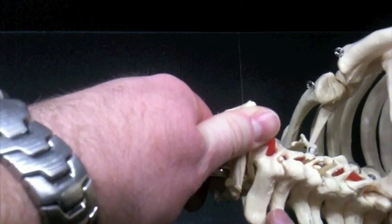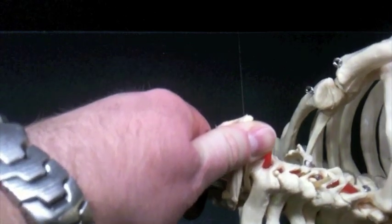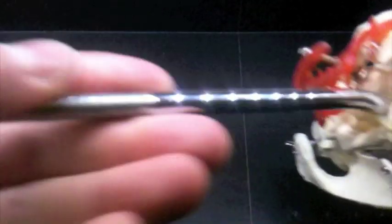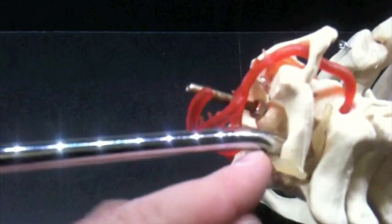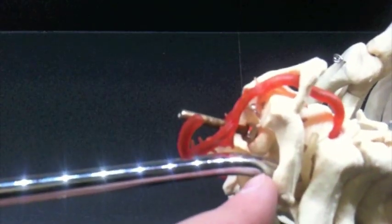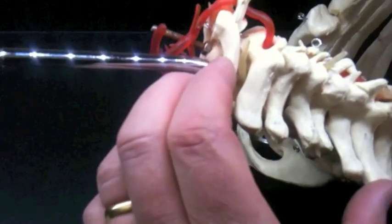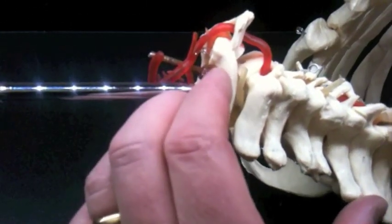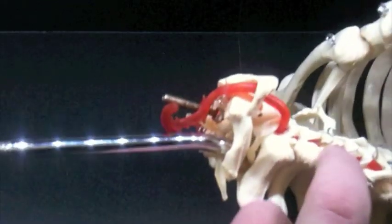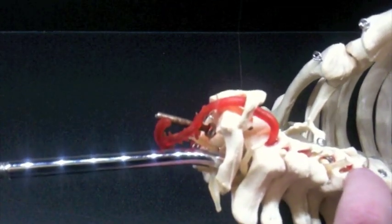On the back, the vertebrae have these spinous processes. The hole going down through every vertebra, down through which the spinal cord passes in life, is known as the vertebral foramen. So these are the seven cervical vertebrae, and we know them because they're the neck vertebrae and they're identifiable by their foramina in the transverse process. None of the other vertebrae in the body have that.